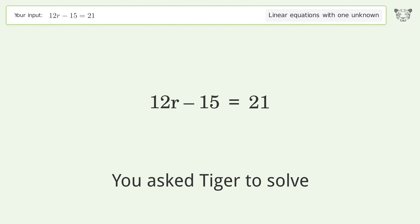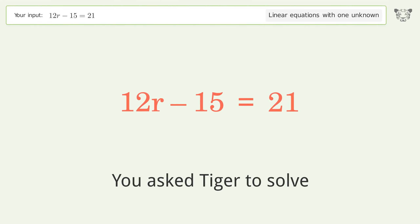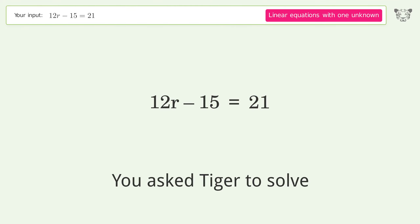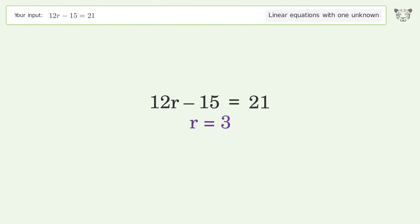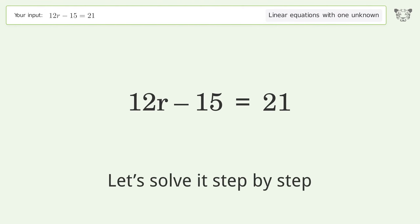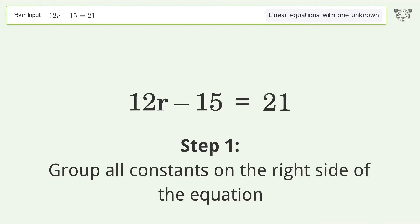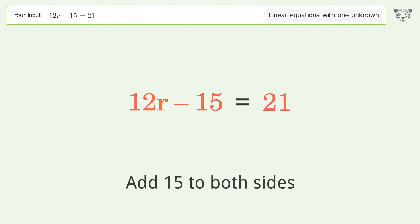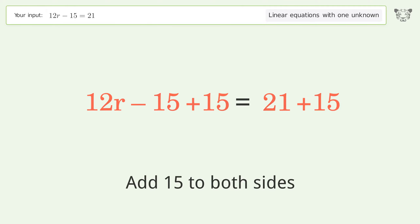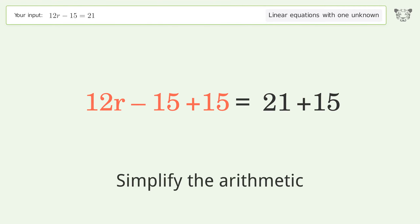You asked Tiger to solve this — it deals with linear equations with one unknown. The final result is r equals 3. Let's solve it step by step. Group all constants on the right side of the equation: add 15 to both sides, then simplify the arithmetic.